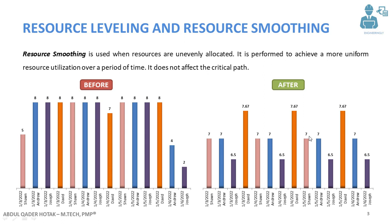The main goal of resource smoothing is to ensure that one resource does not work a lot one day and then be idle the next day. In order to overcome that and ensure that the resources are evenly allocated throughout the project, we perform resource smoothing.